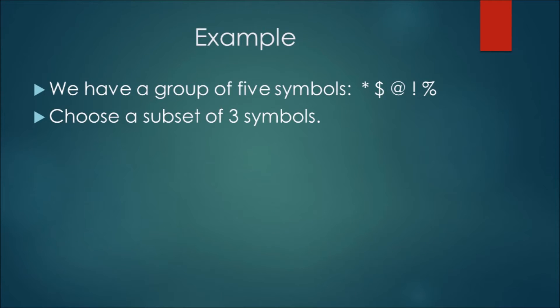Let's take a group of five symbols: asterisk, dollar sign, the at symbol, exclamation point, and the percent sign. We are to choose a subset of three symbols out of these five.